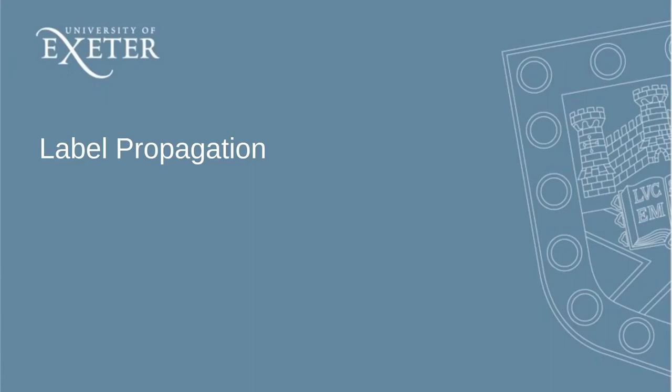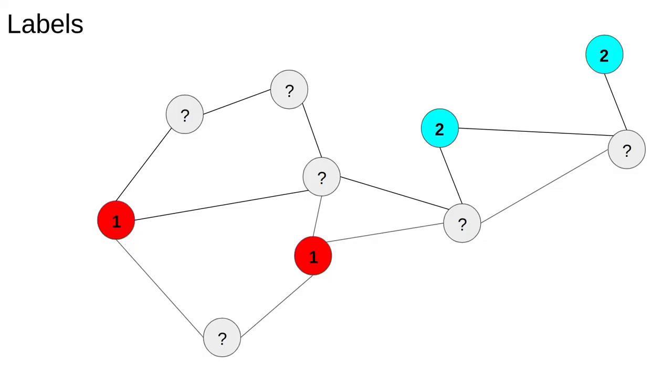In this video we'll talk about the label propagation algorithm. Often we have some sort of label attached to the nodes of our network. For example, if it's a social network, the label could be anything from language to political affiliation to favourite football team.